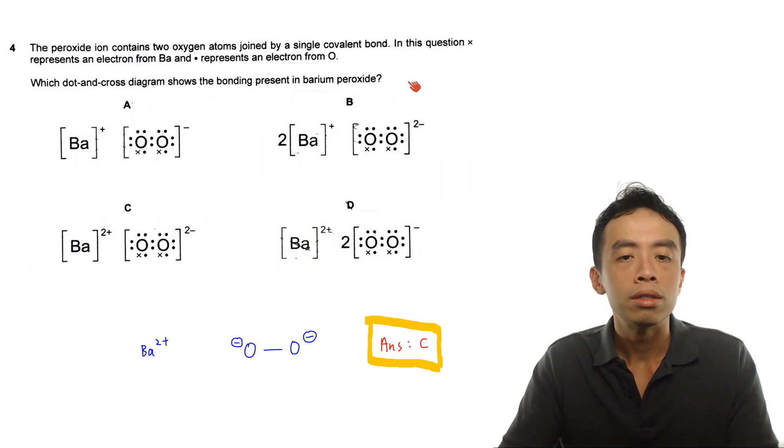Now this question is actually very straightforward because we know that barium, it is a group 2 metal. So in terms of charges, when it forms a cation, it will have to be a plus 2 charge.